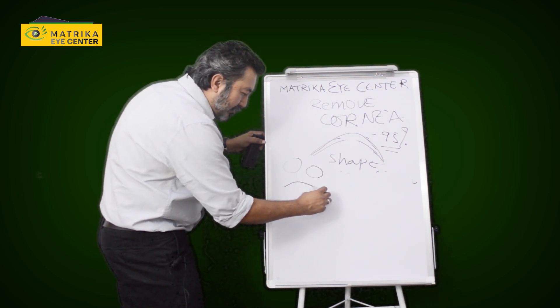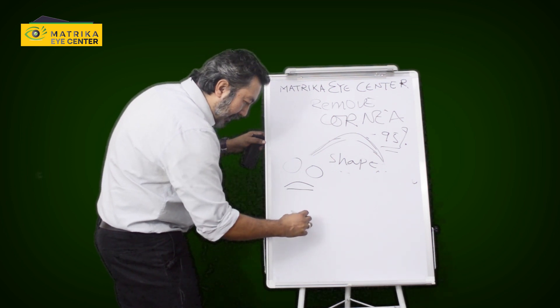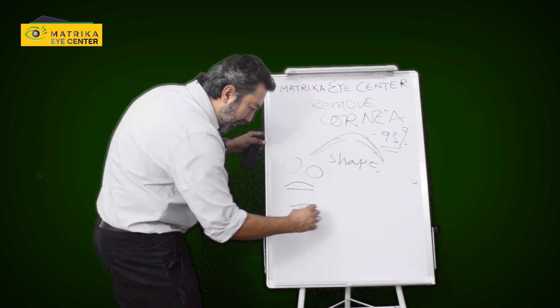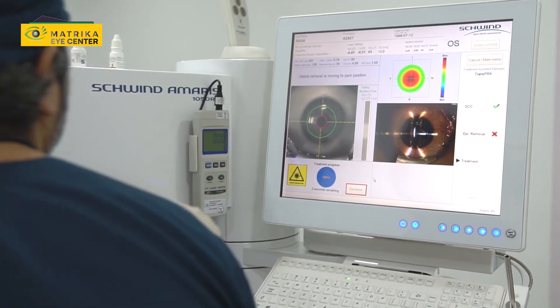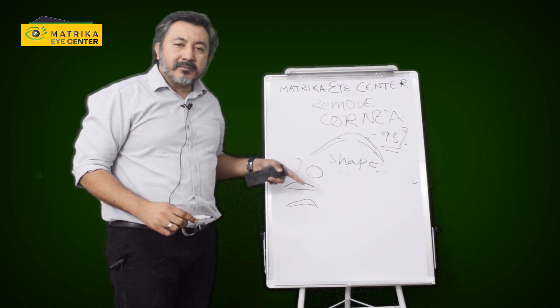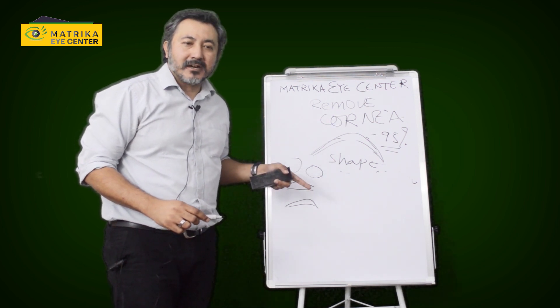In myopia, a steep cornea is flattened. In hyperopia, the cornea is steepened. So these are the procedures. So with lasers, is it a permanent correction? Yes, it is a permanent correction.